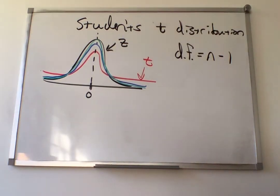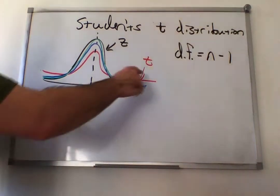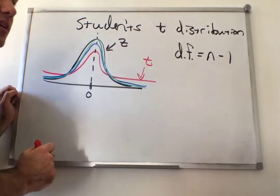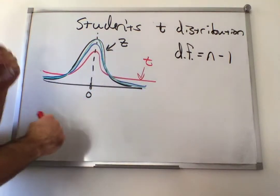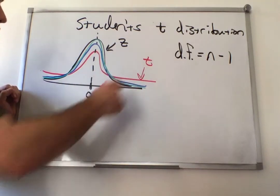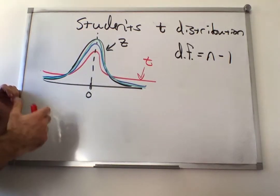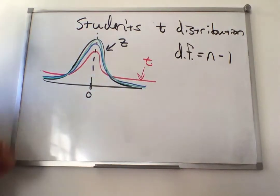Looking at the graph, I've got a bunch of different colors. The black is the z-distribution. The red would be if you had a small sample size, meaning the degrees of freedom is small — that looks more like the red curve. When degrees of freedom gets larger, you get the blue curve, which is closer to the black curve. Make the degrees of freedom even larger and that's the green curve — it gets closer and closer to the black curve.